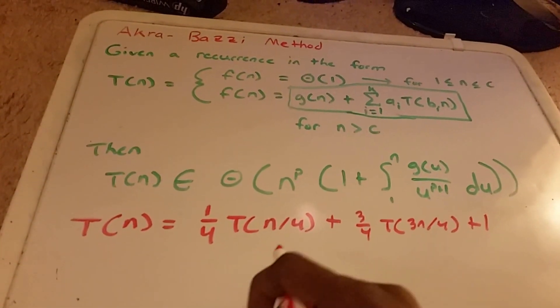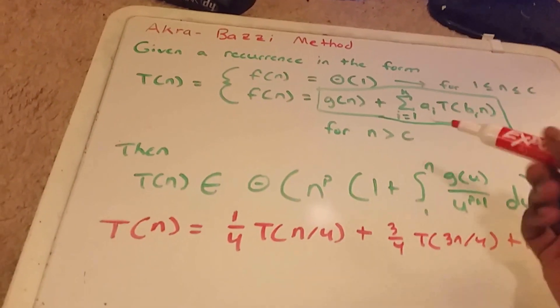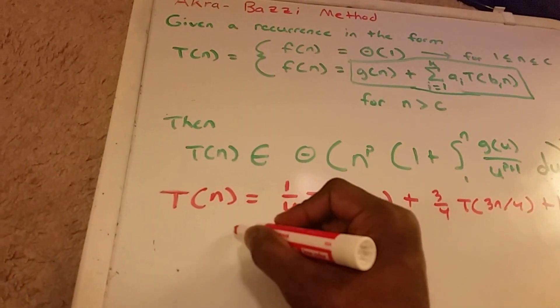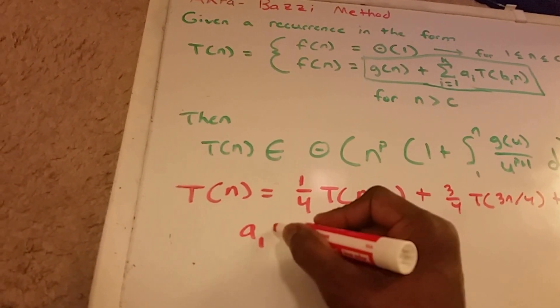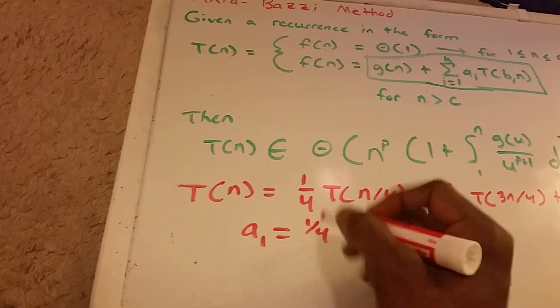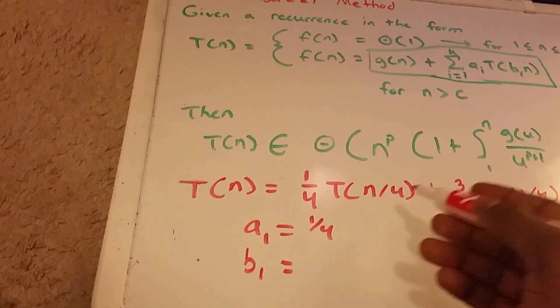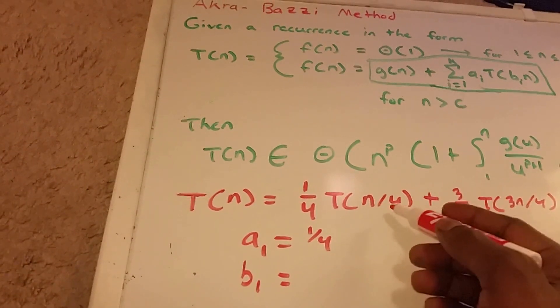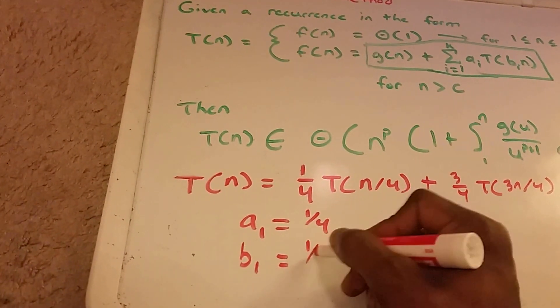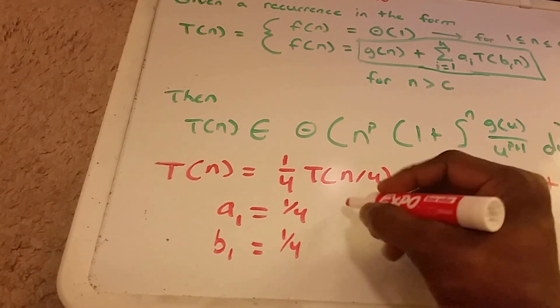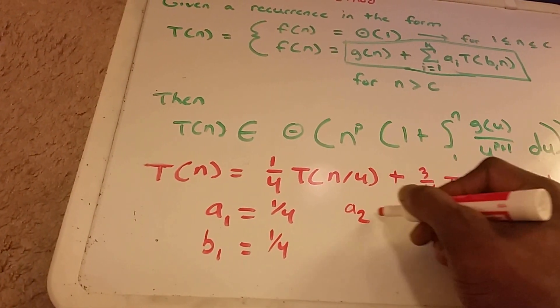So you may say, whoa, this doesn't look anything like this, right? But what we see here is our a subscript 1 is 1 fourth. Our b subscript 1 is 1 divided by 4 as well. And then our a subscript 2